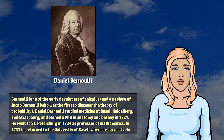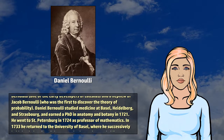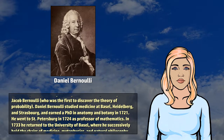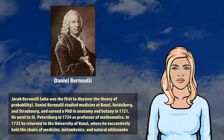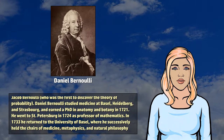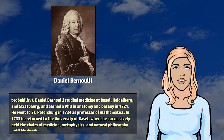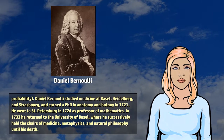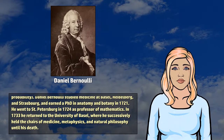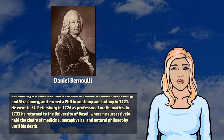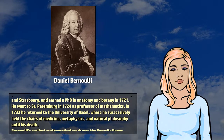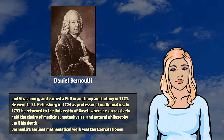Daniel Bernoulli studied medicine at Basel, Heidelberg, and Strasbourg, and earned a PhD in anatomy and botany in 1721. He went to St. Petersburg in 1724 as professor of mathematics.